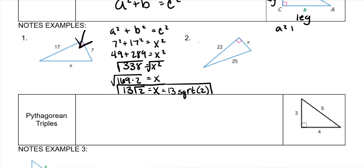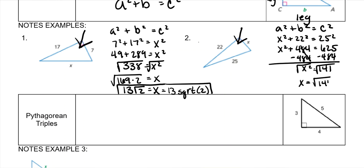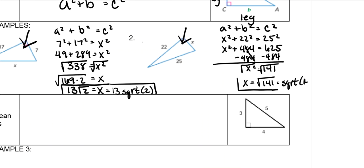On this one, my hypotenuse is 25, so x squared plus 22 squared equals 25 squared. 22 squared is 484, and 25 squared is 625. Subtract 484 from both sides, and x squared equals 141. Take the square root of both sides — there are no perfect square factors for 141, so it's just square root of 141. In Schoology you would write SQRT(141).